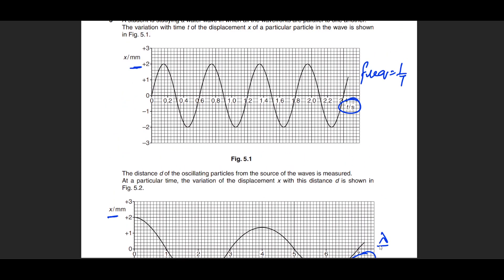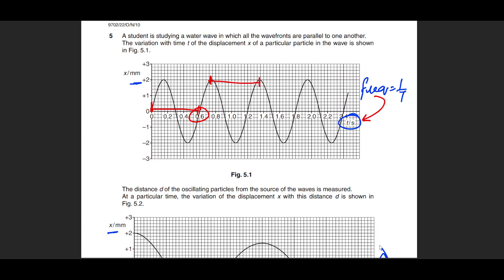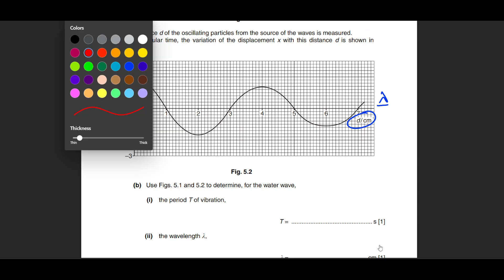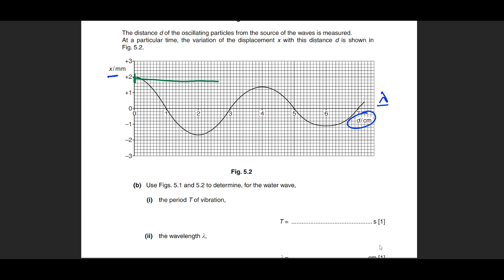From the time-axis graph we find frequency using f = 1/T, and from the distance-axis graph we find wavelength λ. Be careful — pick values from the correct axis. From this graph, one wave takes 0.6 seconds, so T = 0.6 s. For wavelength, from crest to crest, the value is 4 cm — confirmed also from trough to trough (1 to 5 = 4 cm).